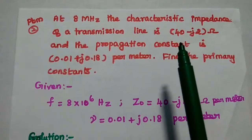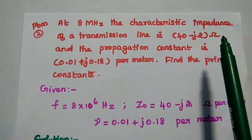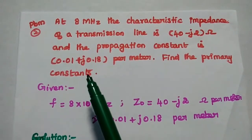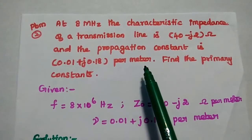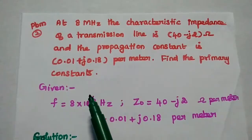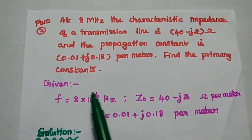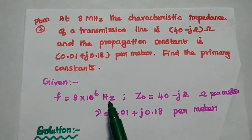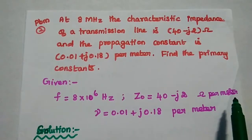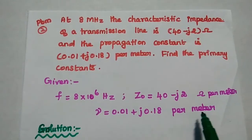At 8 megahertz, the characteristics impedance of a transmission line is 40 minus J2 ohm, and the propagation constant is 0.01 plus J 0.18 per meter. Find the primary constants. The given data: frequency is 8 megahertz, that is 8 into 10 to the power of 6. Z naught is equal to 40 minus J2 ohm per meter. Gamma is equal to 0.01 plus J 0.18 per meter.